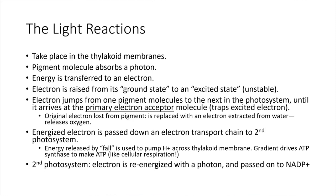Let's get into the actual details of photosynthesis — what is happening inside of the plants? I've got a lot of text on this slide, we're going to walk through it, but then we're going to look at a picture and go through these same exact steps. So thinking about inside of a chloroplast, inside of the thylakoid membrane, that's where our pigment molecules are hanging out — they're embedded in that membrane. What's going to happen first off is a pigment molecule absorbs a photon.